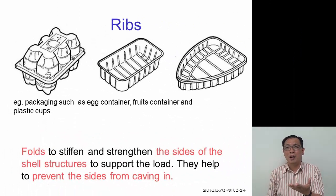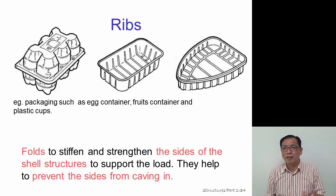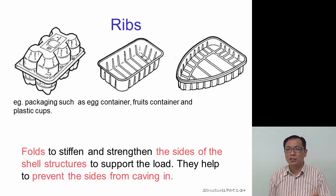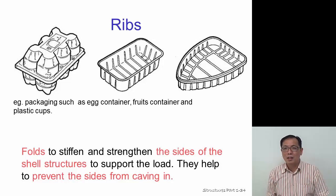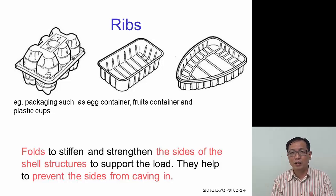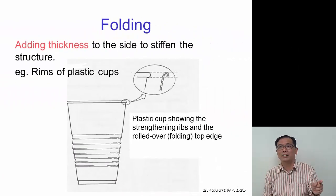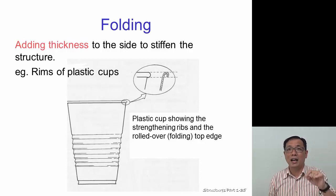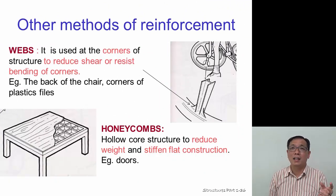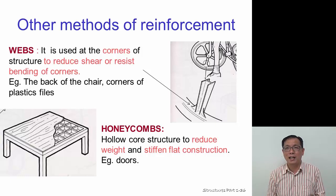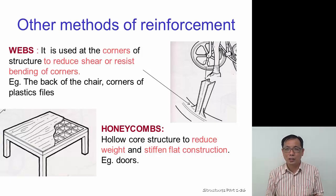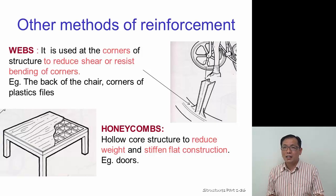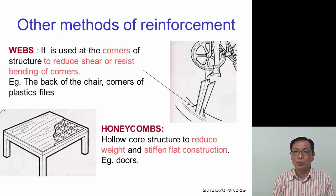For shell structure reinforcement, we normally use ribs. You can see them in egg trays or disposable food containers — ribs are used to stiffen and strengthen the sides. Folding adds thickness to the sides to stiffen them — for example, the rims of plastic cups are folded to give extra stiffness. Webs are used on the backs of chairs or plastic files to spread the load and resist shear and bending at corners.